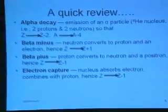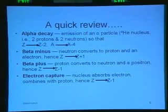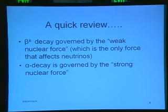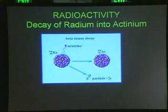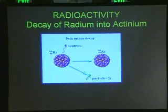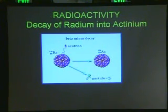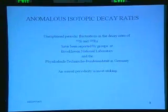A quick review: there are various kinds of decays. Alpha decay is emission of an alpha particle; beta decay is emission of an electron. The effects I'll be talking about appear to involve only beta decays. Alpha is governed by the strong nuclear force and beta decays by the weak nuclear force, which also involves neutrinos, which I think will play a key role in this project. Here's an example of the decay of radium — when a beta particle is emitted, the radium transfers to actinium, same atomic mass but a different atomic number.